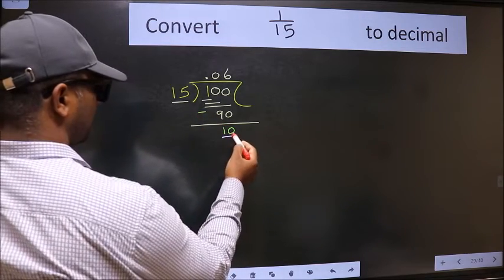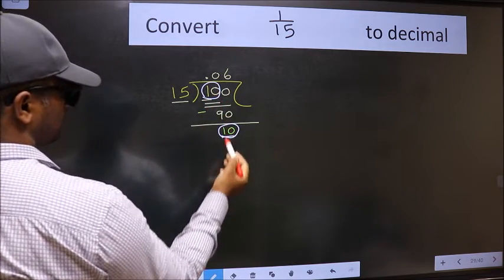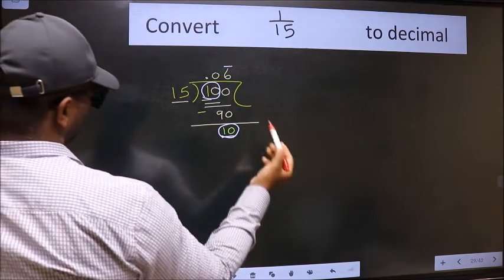We got 10 again. Earlier also we had 10. Now also 10. That means we get bar on this number. Therefore,